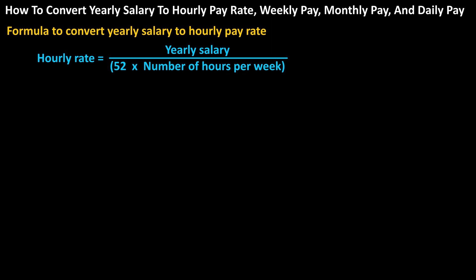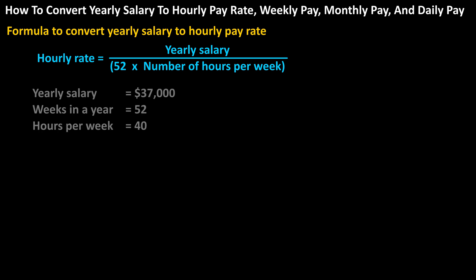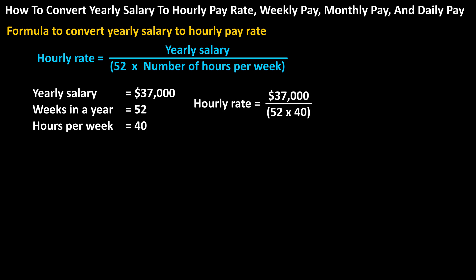As an example, let's say that someone makes a yearly salary of $37,000 and they work a typical 40-hour work week. Plugging into the formula: hourly pay rate equals $37,000 divided by the quantity 52 times 40, which gives us $37,000 divided by 2,080 hours. This calculates to $17.79 per hour, rounded off.